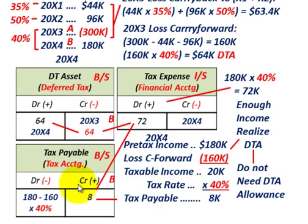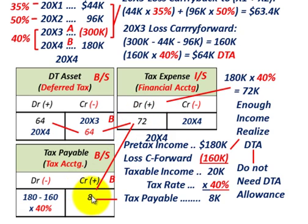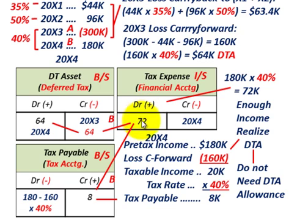Let's record the entries for 20x4. We credit tax payable for $8,000 — the current amount. Our tax expense is $72,000. We can use up the total deferred tax asset, looking at it as the balancing amount between the $72,000 tax expense and the $8,000 tax payable. We debit tax expense $72,000, credit tax payable $8,000, and credit the deferred tax asset for $64,000 — using it all up and bringing it to a zero balance. Everything balances: $72,000 equals $8,000 plus $64,000.